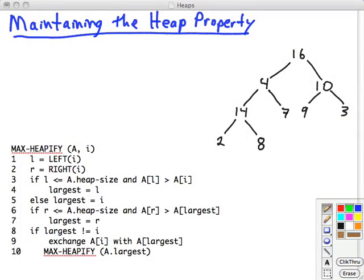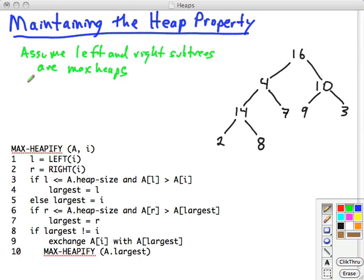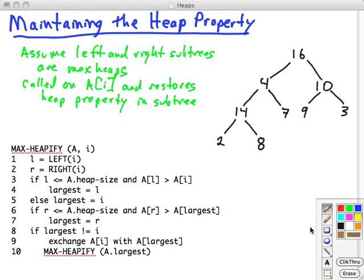MaxHeapify assumes that the left and right subtrees of the node i that it's called on are MaxHeaps. You call it on a sub i, which may or may not be smaller than its children, so it's intended to fix the heap property when a change is made at a node. The subtree rooted at i will be a heap. Let's look at the code here.